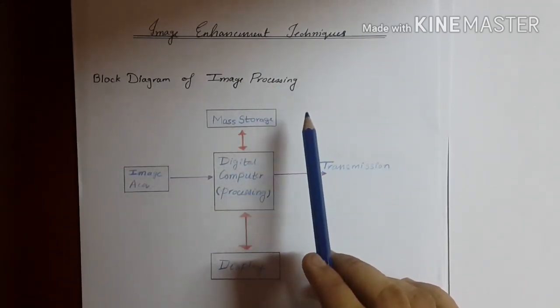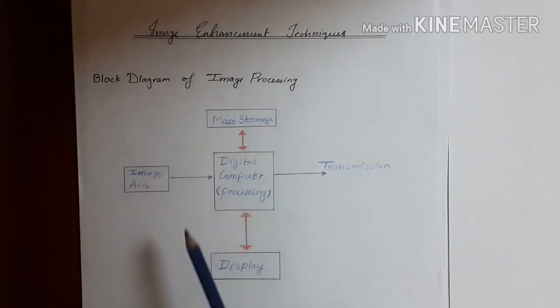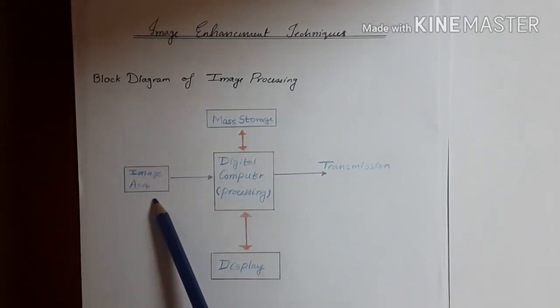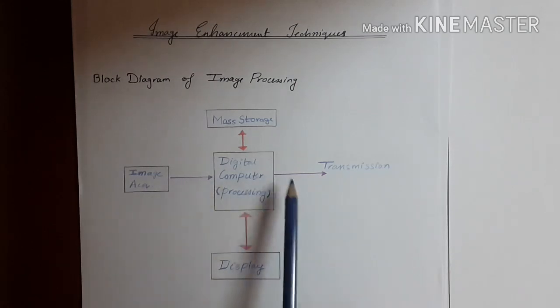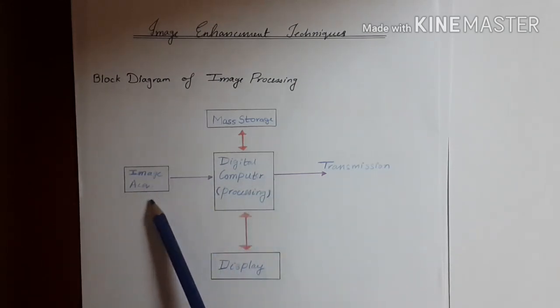Now here, this is the generic block diagram of image processing. The first block is image acquisition, which is basically capturing the image. It is done in two types.